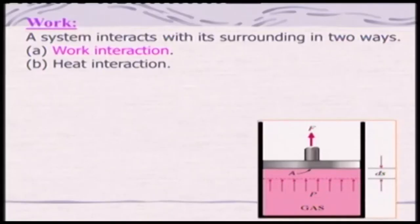Now we will look at the thermodynamic concept of work. A thermodynamic system can interact with its surroundings in only two ways: work interaction and heat interaction. First, we will consider the work interaction. We will take, as usual, a piston-cylinder arrangement containing a certain amount of gas.